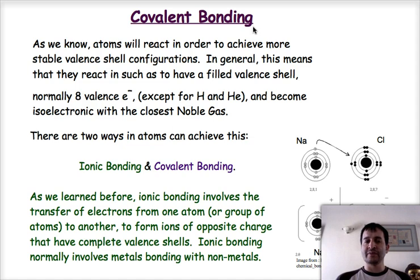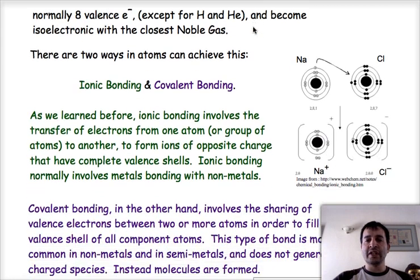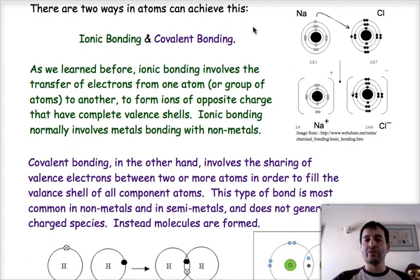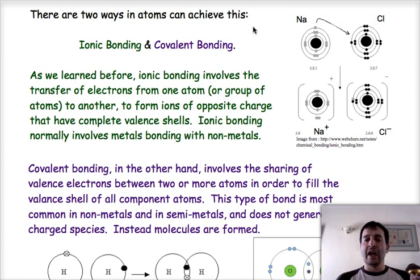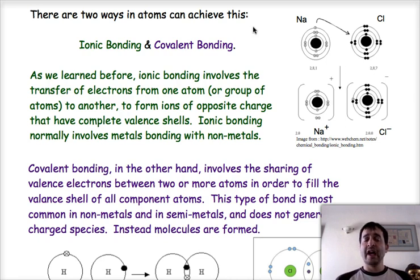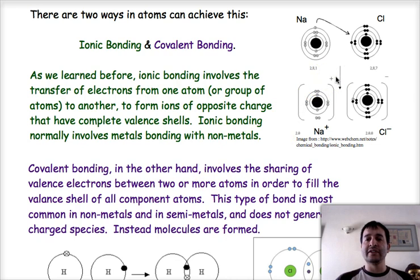There are two ways that you can achieve this: ionic bonding, which we've spoken about before, and covalent bonding. As a quick reminder, ionic bonding is the one that occurs when atoms transfer valence electrons from one to another in order to form ions, which are charged species of opposite charge that will attract — they will have an electrostatic interaction. That bonding normally occurs between a metal and a non-metal, and we can see that illustrated quite nicely here on this image.